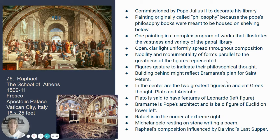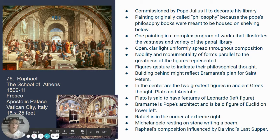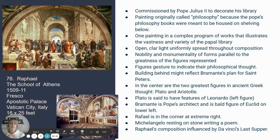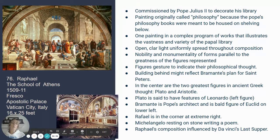Our next image is number 76 — painted by Raphael, titled The School of Athens. It was commissioned in 1509 and completed in 1511. It is a fresco in the Apostolic Palace within Vatican City, Italy, and is 16 by 25 feet. This image shows the School of Athens, and down here I wanted to show how it looks in the room it was painted in — a beautifully glorified, decorated space. Raphael is responsible for all the frescoes within this room.